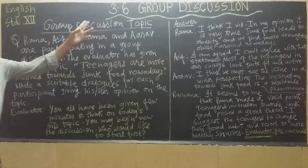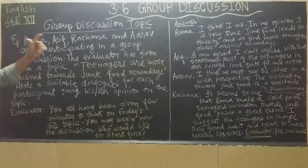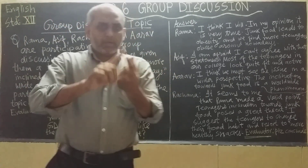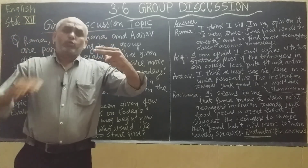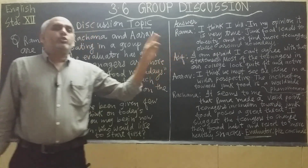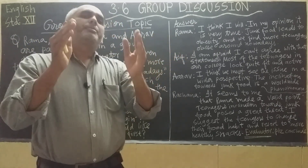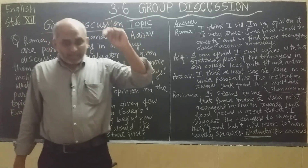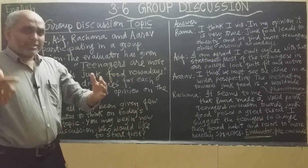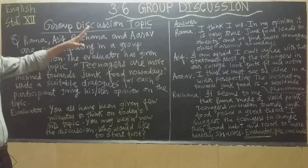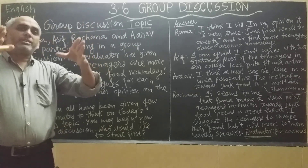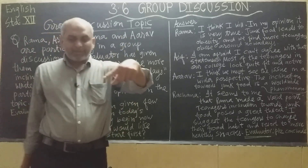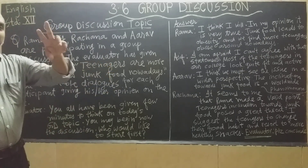Today we are going to study the third part of the 3.6 lesson on group discussion. So far we have studied Part 1 and Part 2, covering the evaluation procedure of book discussion, what qualities are to be judged, and the dos and don'ts — what you should do and what you should not do at the time of a book discussion. We discussed Part 2 in detail yesterday.